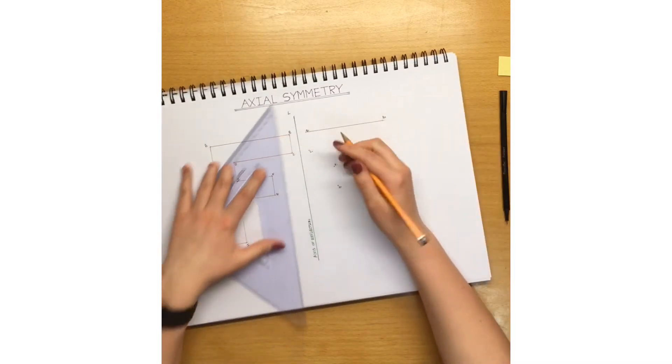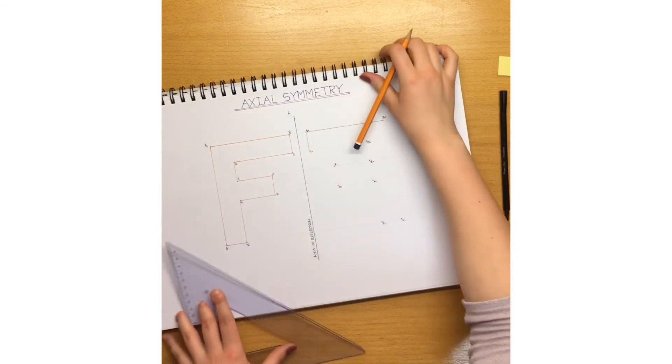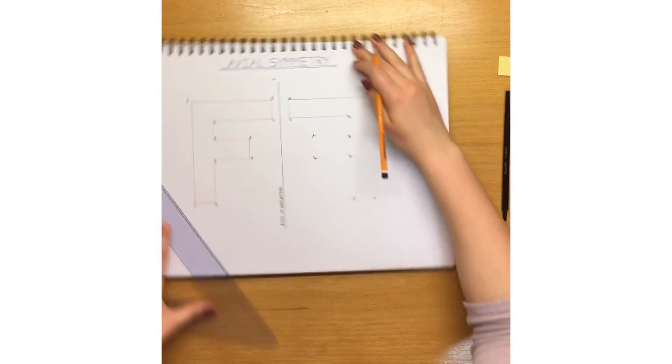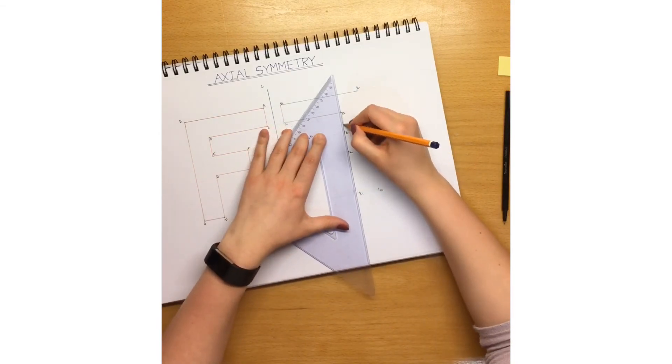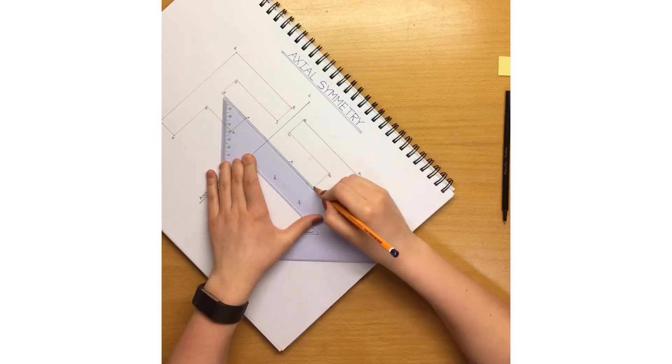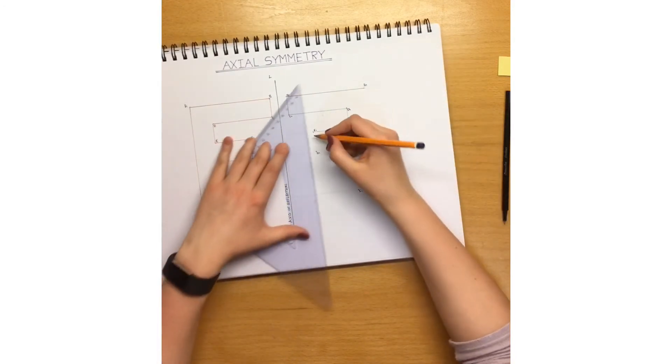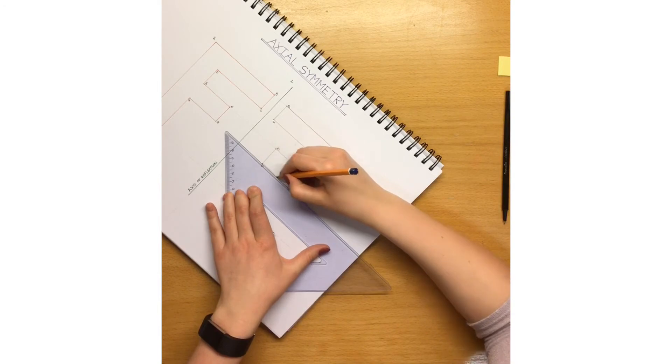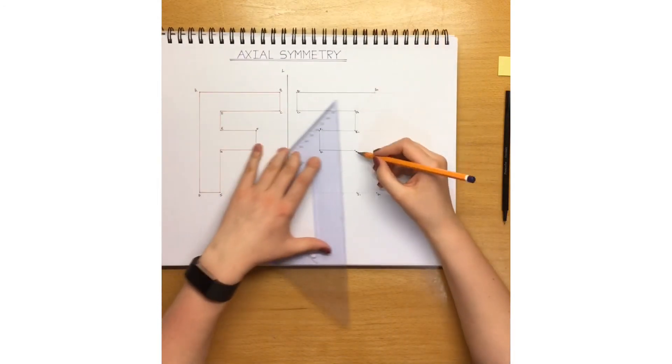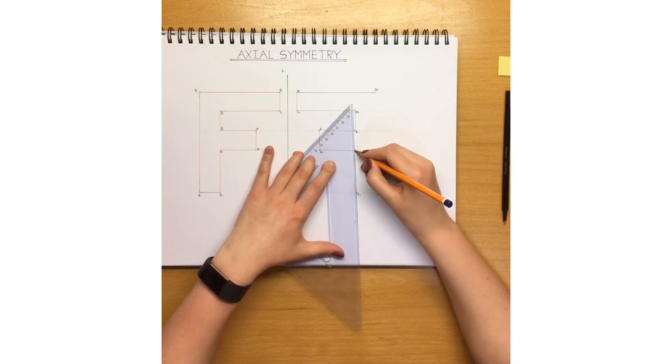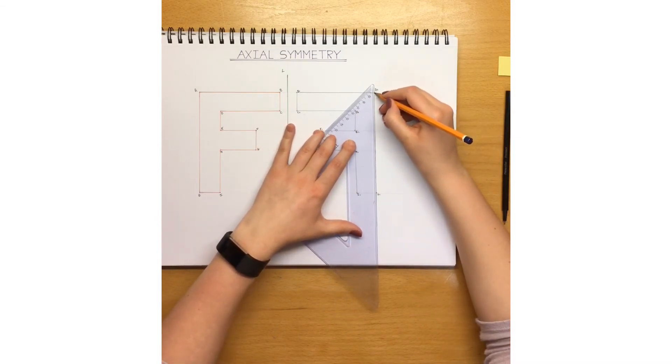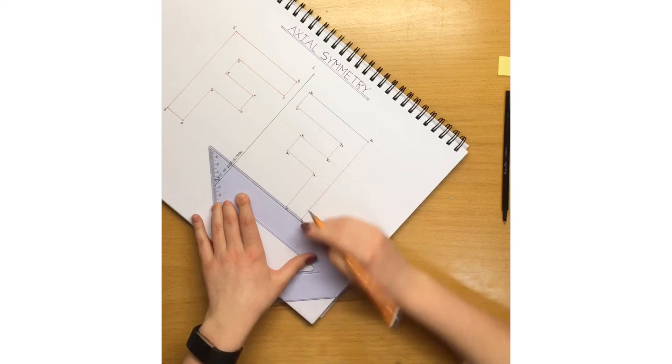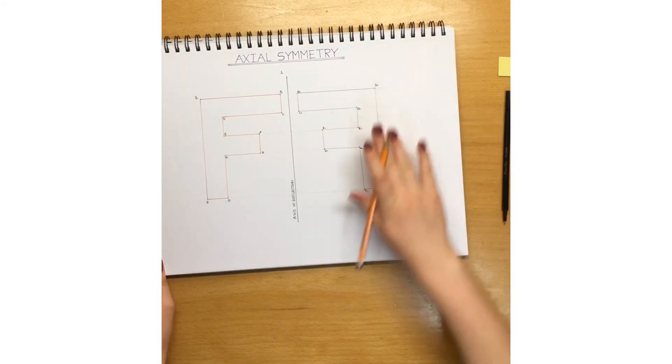From there you can see that B is joined to C, C is joined to D, D to E. And you just repeat the same pattern as on the other side, each letter. And there is your image of the shape.